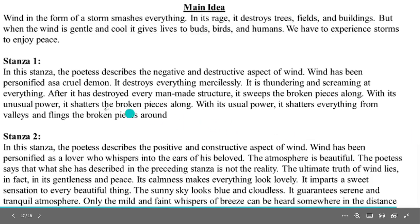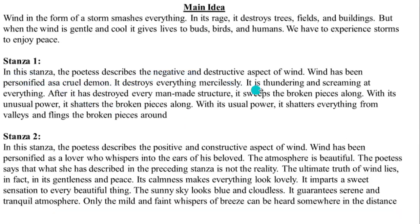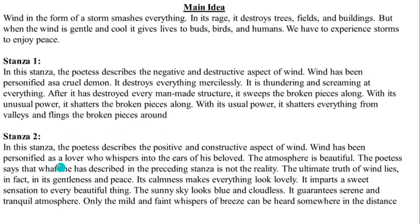Paraphrase of the stanzas of the poem. Stanza one: The poetess describes the negative and destructive aspect of wind. Wind has been personified as a cruel demon — it destroys everything mercilessly, thundering and screaming. After destroying every man-made structure, it sweeps and shatters the broken pieces from valleys and flings them around with unusual power.